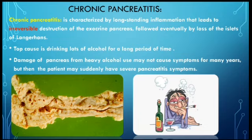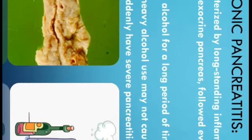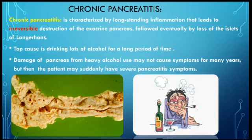Now, what about chronic pancreatitis? As the name suggests, it is a long-standing inflammation. The key difference from acute pancreatitis is irreversible destruction of the exocrine pancreas, which secretes digestive enzymes. If it persists, there is also destruction of the islets of Langerhans, so we lose both the exocrine and endocrine parts. The top cause of chronic pancreatitis is heavy alcohol consumption, whereas the top cause of acute pancreatitis is gallstones.